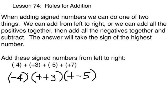Going from left to right, we have negative 4 plus positive 3, which gives us negative 1. Then going from left to right, negative 1 plus negative 5 would give us negative 6. And then going from left to right, to final negative 6 plus positive 7 would give us positive 1.